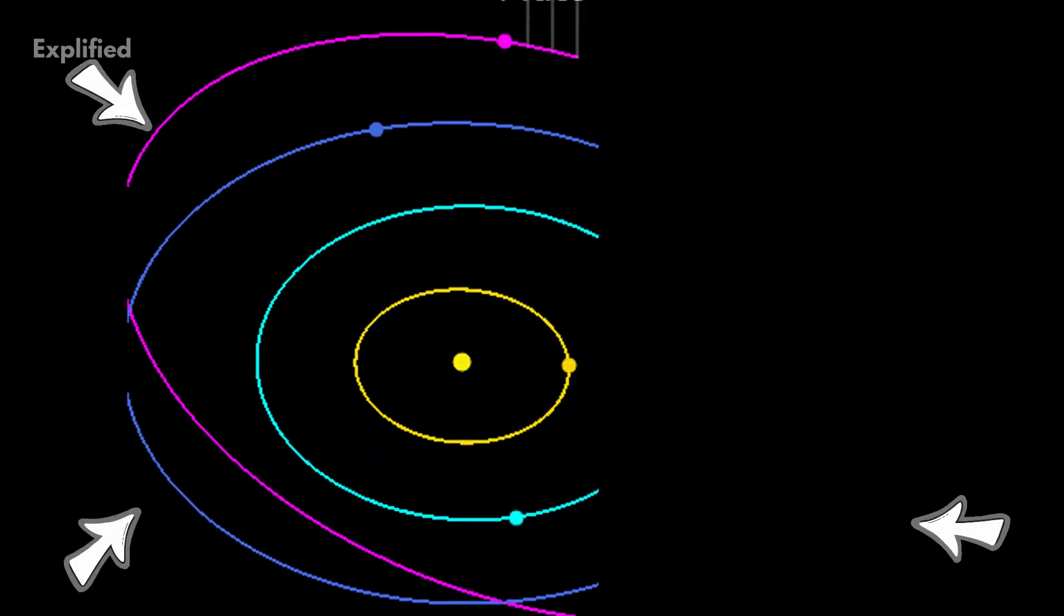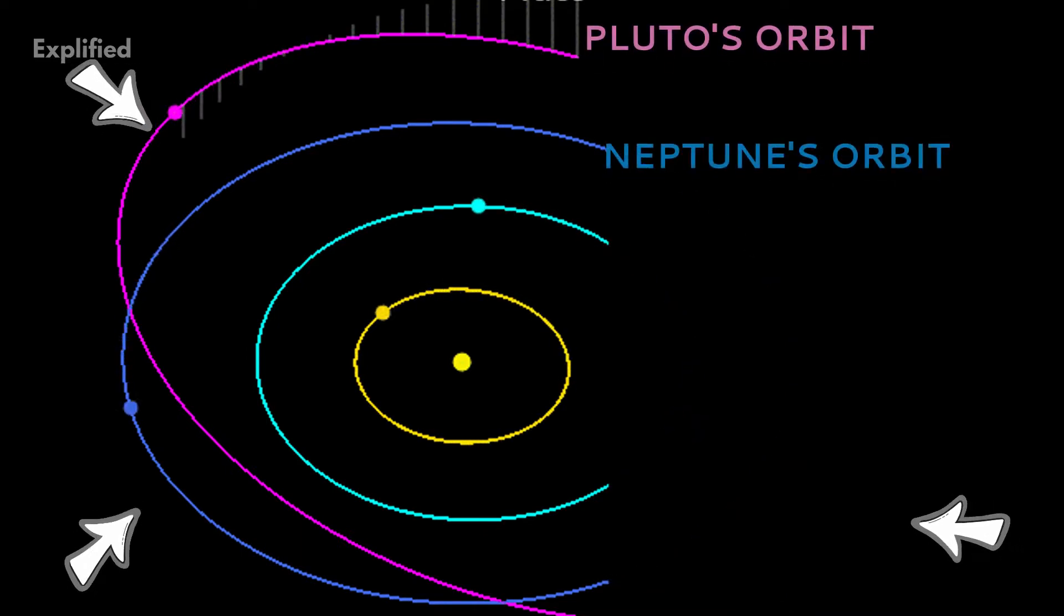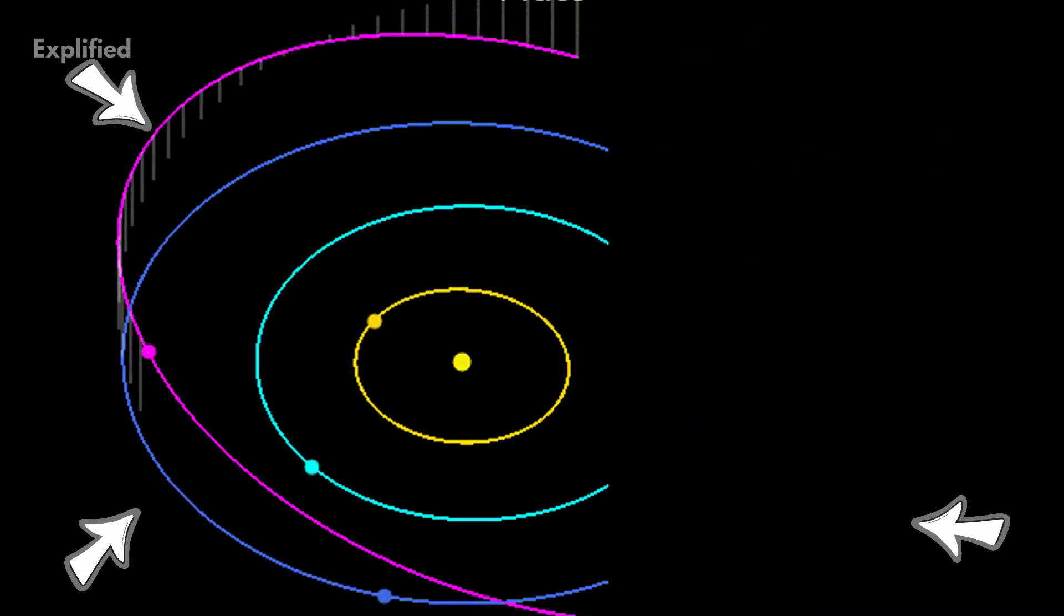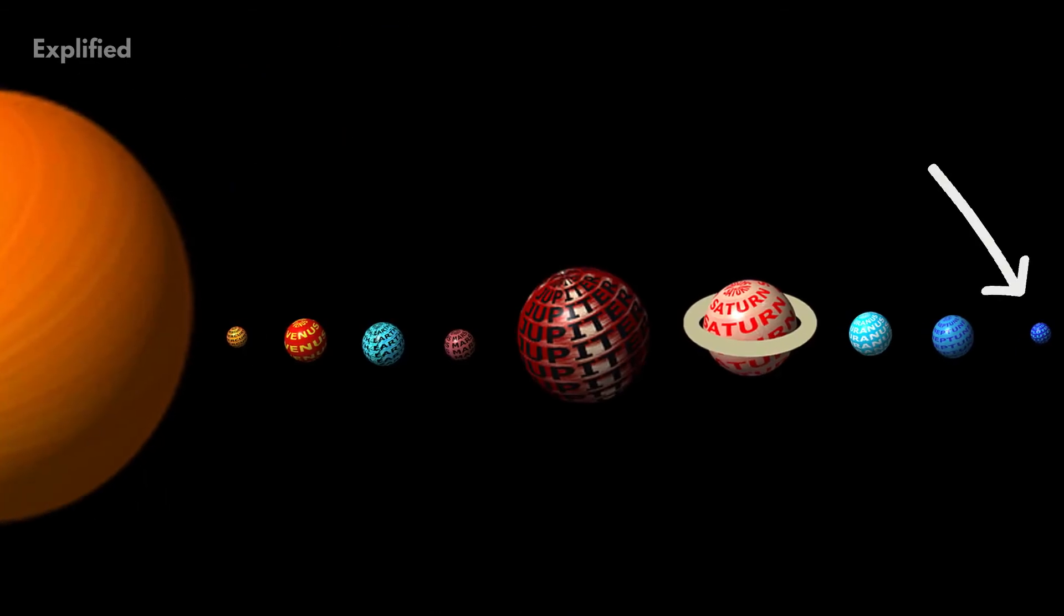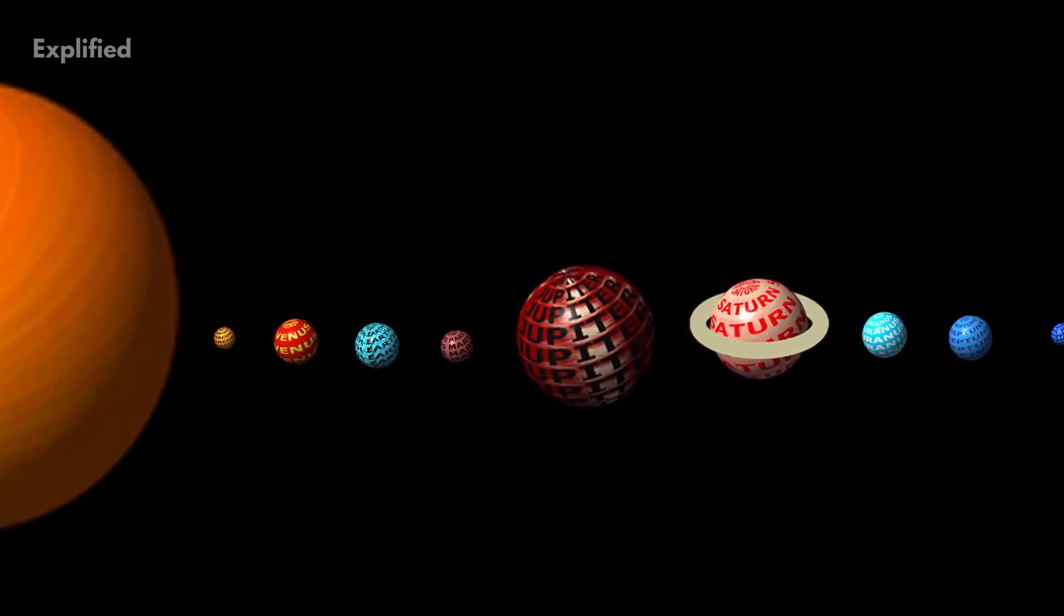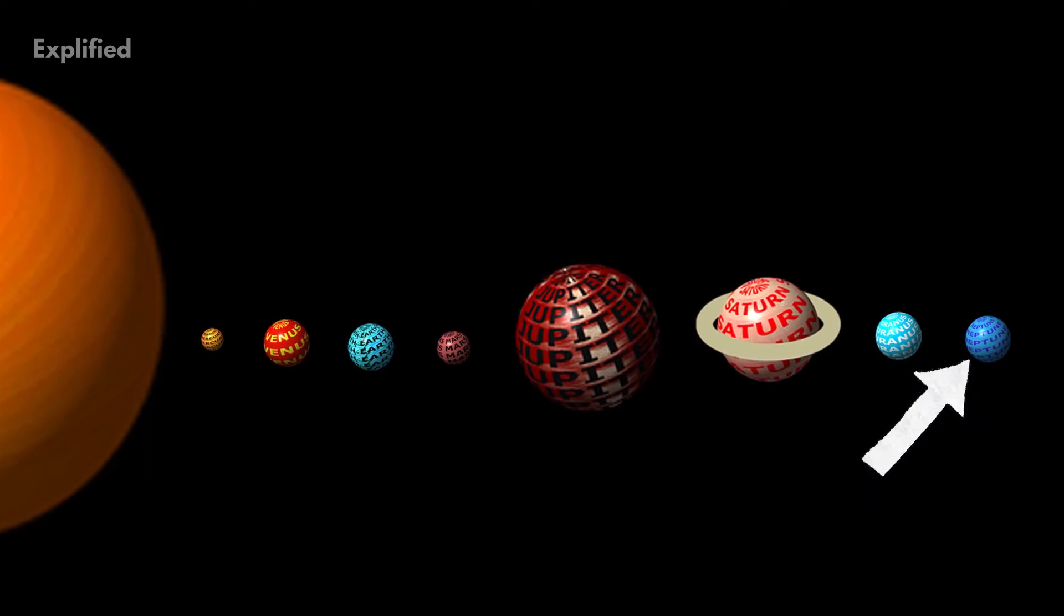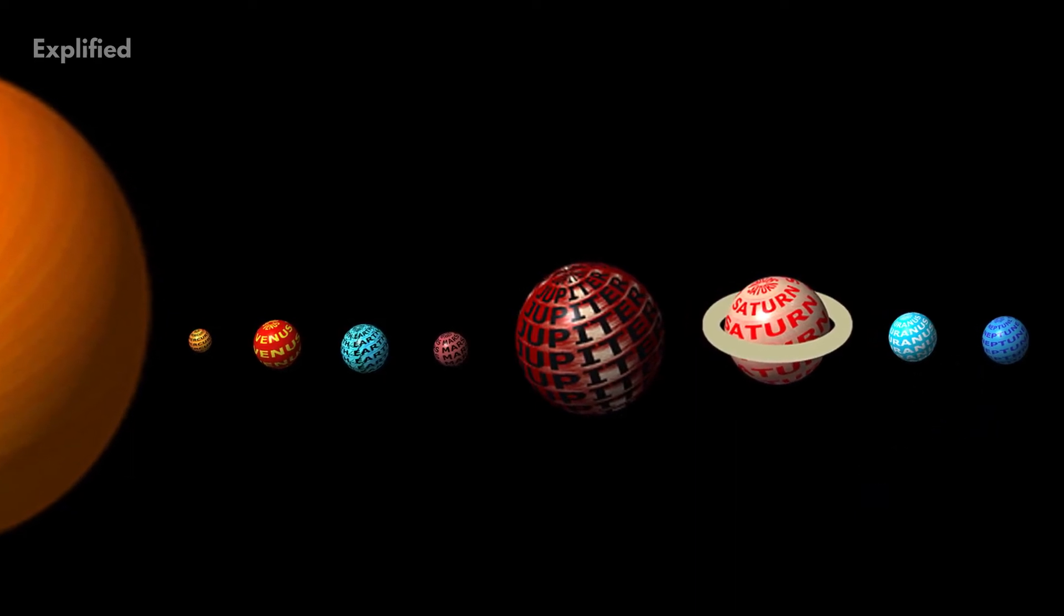Pluto being the farthest planet has an extremely elliptical orbit that it could come inside the orbit of Neptune and make it the farthest. But after the demotion of Pluto to a dwarf planet, Neptune once again became the farthest, at least for now.